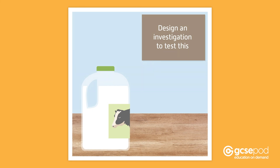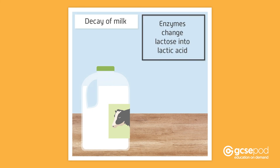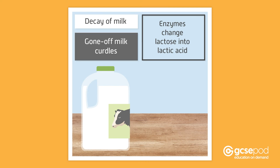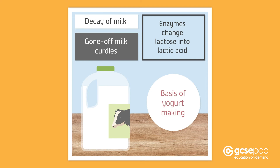Now you need to design an investigation to test this. One method could be to use the decay of milk. When milk decays, decomposers release enzymes that change the lactose in milk into lactic acid. This is why gone-off milk curdles, and it is also the basis of yoghurt making.